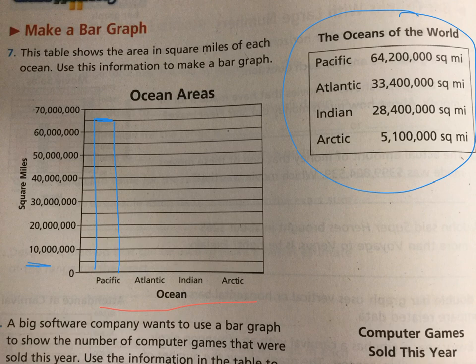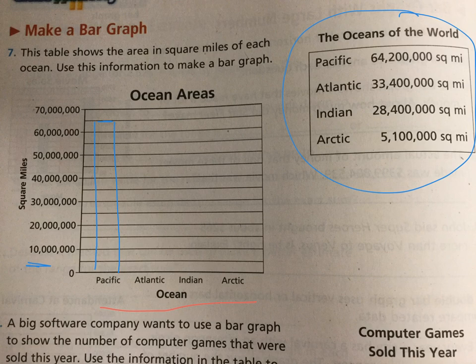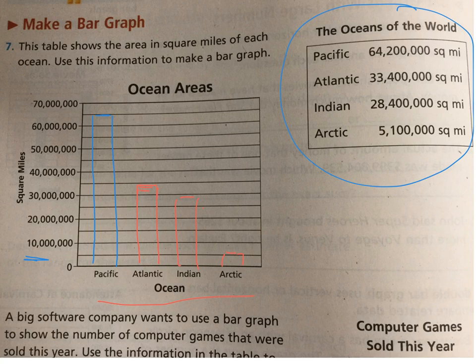Go ahead and create bars for the Atlantic, Indian, and Arctic Oceans. Pause your video and do that, and I'll put the answers up for you in a moment. Here are your answers: the Atlantic Ocean bar is just below the 35 million square miles line. The Indian Ocean is just below the 30 million square miles line. And the Arctic Ocean is just over the 5 million square miles line. Your bars should actually look like that.